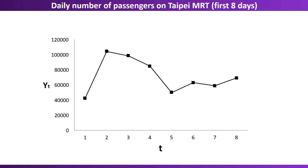For forecasting a future value, I can only use data from previous time periods. In this example, if I want to forecast the value at time point 9, then I can only use data until time period 8, until t equals 8.